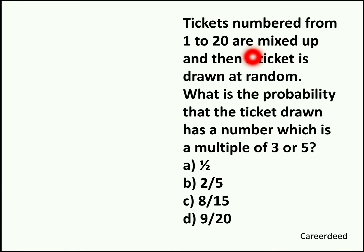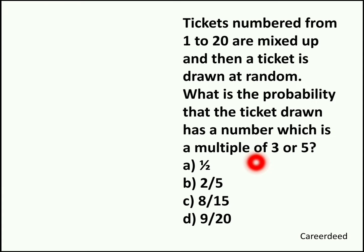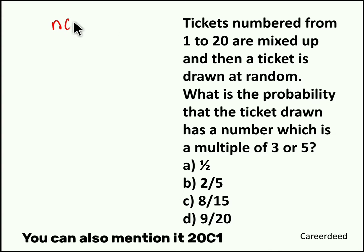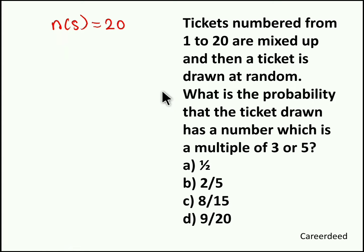Tickets numbered from 1 to 20 are mixed up and then a ticket is drawn at random. What is the probability that the ticket drawn has a number which is a multiple of 3 or 5? So totally we have 20 tickets from 1 to 20, so total sample space here is 20. From these 20 tickets you have to select 1 ticket that should be a multiple of 3 or a multiple of 5.